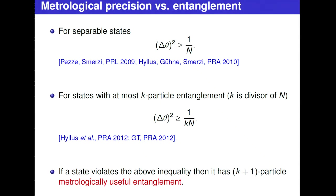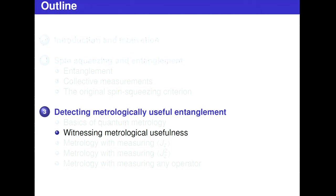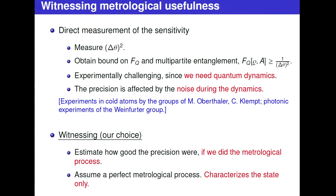Any state that violates the K-particle bound has K+1 particle entanglement. So there is an easy way to detect multipartite entanglement: we just look at how well we estimate the parameter, and if we estimate it better than a bound, we know the state is multipartite entangled.